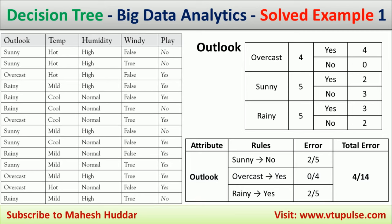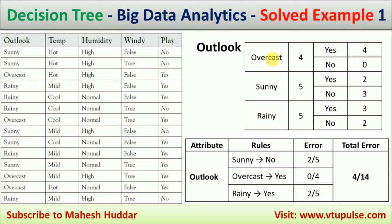We will consider the first attribute: outlook. The possible values of outlook are overcast, sunny, and rainy. Overcast appears four times, sunny appears five times, and rainy appears five times in the dataset.